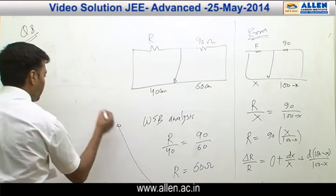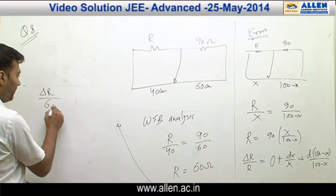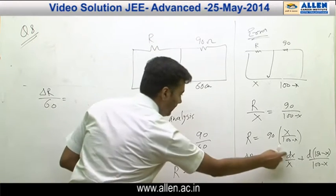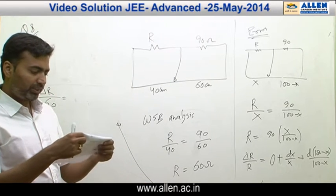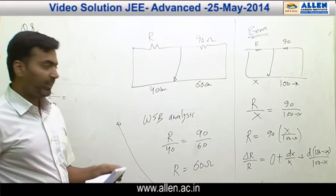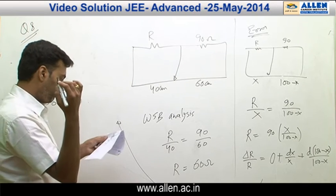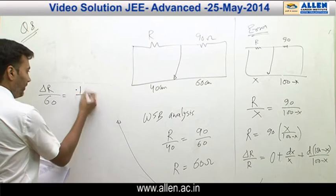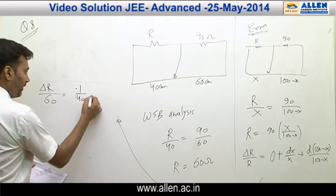Continuing from here, delta R by R. Now R you just calculated came out to be 60. dx is to be the error that they have mentioned, which is to be the least count of the scale that is used. So dx happens to be 1 mm, so we take it as 0.1 centimeters upon x. From one side it's 40 centimeters.